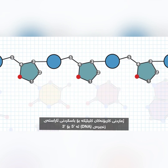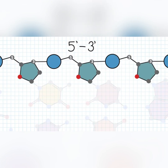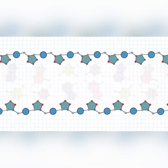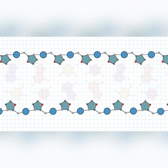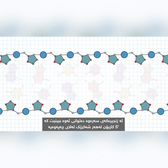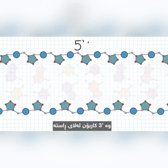The carbon numbering is key to describing the directionality of the DNA strand, 5' to 3'. Looking within the sugars, there is an intrinsic orientation difference between the two strands. On the top strand, you can see that the 5' carbon of each sugar is on the left and the 3' carbon is on the right.